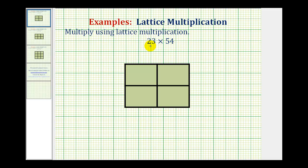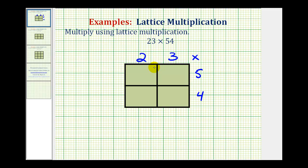Since we have a two-digit number times a two-digit number, we need to create a two-by-two table, as shown here. We're going to write 23 along the top, above the columns, and then we'll write 54 along the end of the rows on the side. We can put a multiplication symbol here, and now to create the lattice, we're going to construct the diagonals for each of these smaller rectangles from the upper right to the lower left.